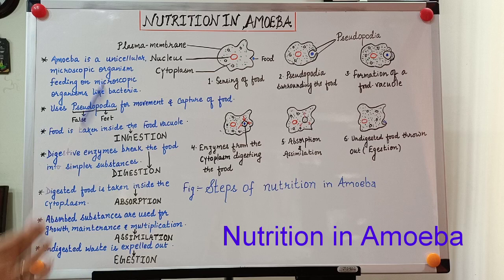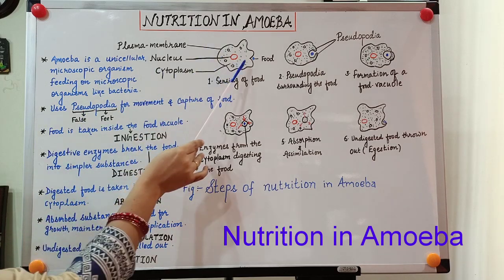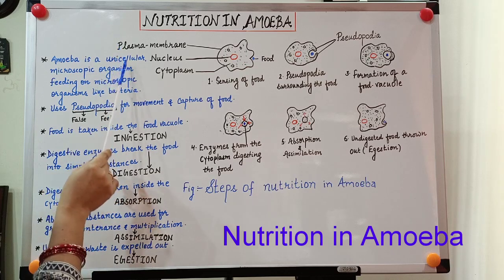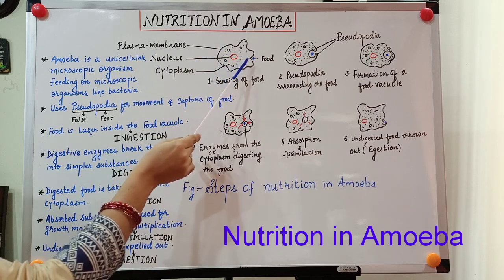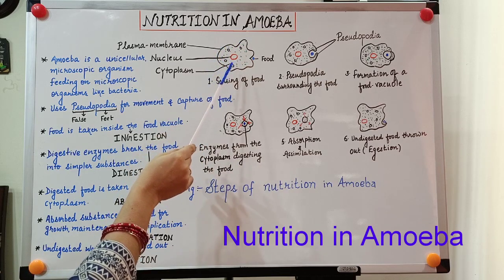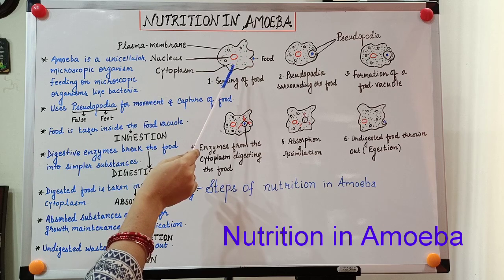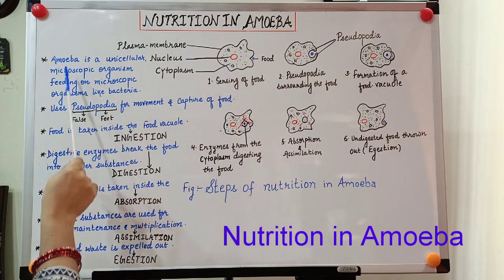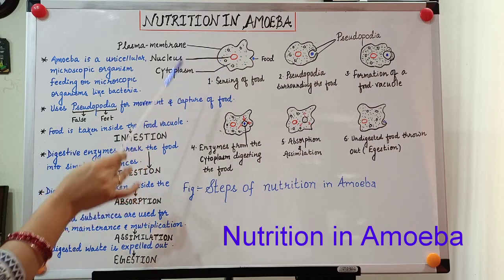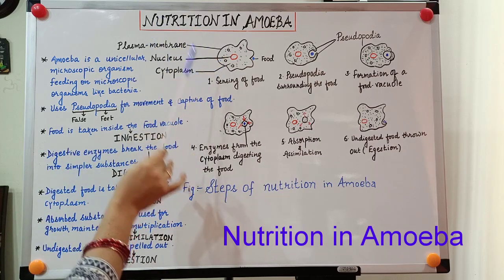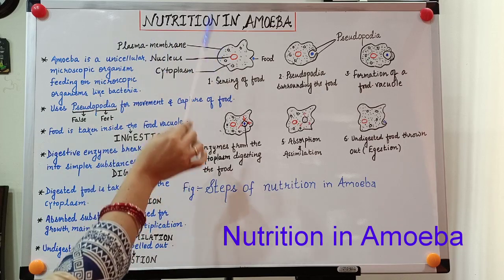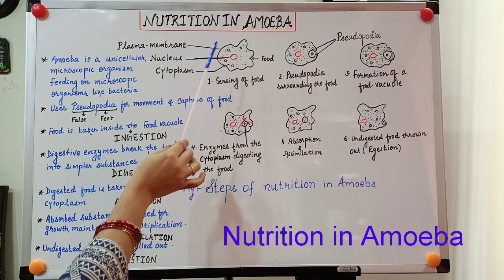Before starting the class let us study the structure of amoeba. Amoeba is a unicellular microscopic organism. Unicellular means the body of amoeba is made up of only one cell, unlike humans which are multicellular and are made up of many cells. It is a microscopic organism, which means we cannot see an amoeba with our naked eyes. To see an amoeba we need a microscope.